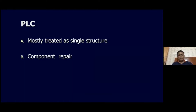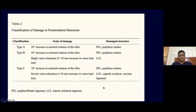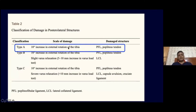In addition to PCL, some sort of PLC — posterolateral corner injury — is also present, and the dial test shows excessive external rotation at both 30 and 90 degrees. Most of us usually treat the posterolateral corner as a single structure and reconstruct it entirely when diagnosed. But sometimes you need to do component repair — like the LCL alone or the Popliteal Sling alone. Using Fennelly's classification, the posterolateral corner is divided into three types: Type A has only increased external rotation of the tibia, meaning only the Popliteus and Popliteofibular Ligament are torn.